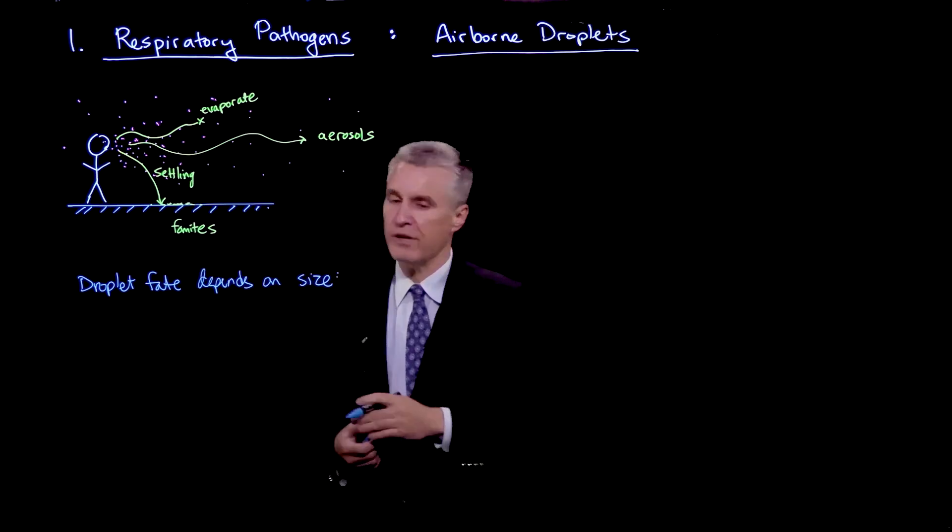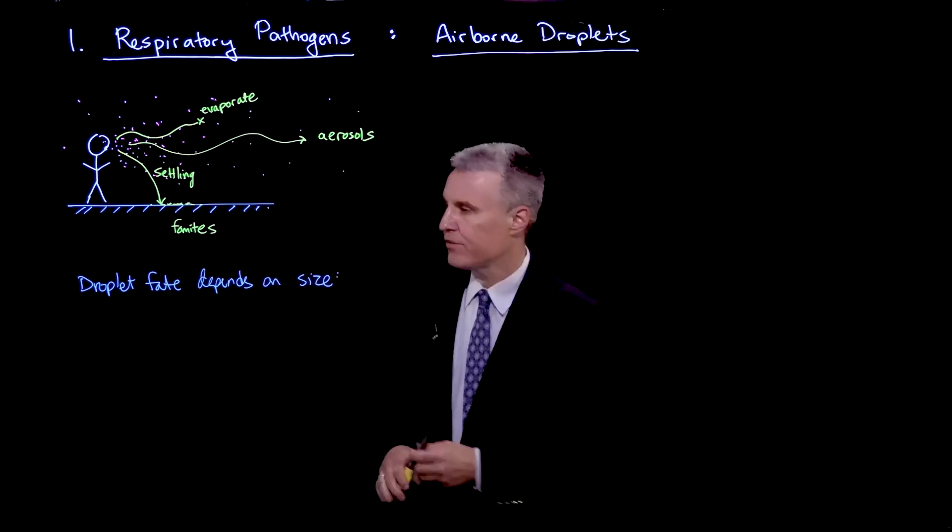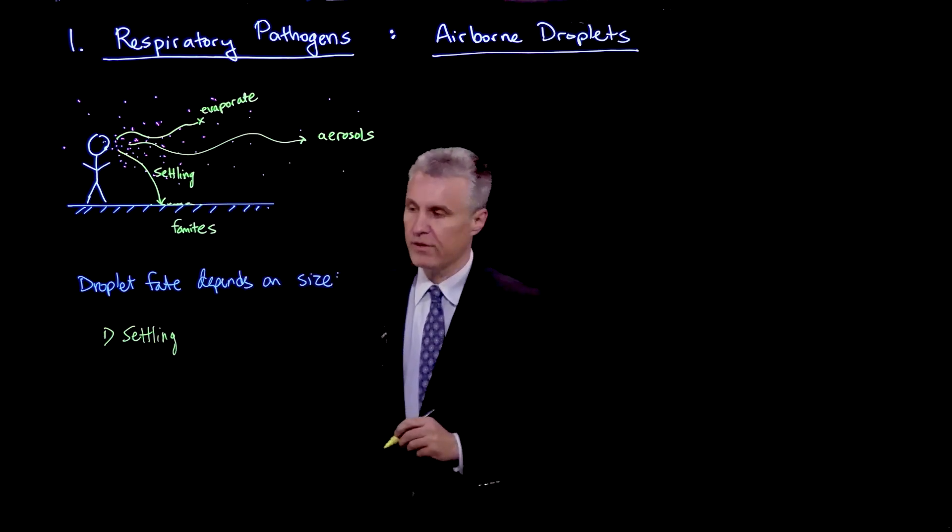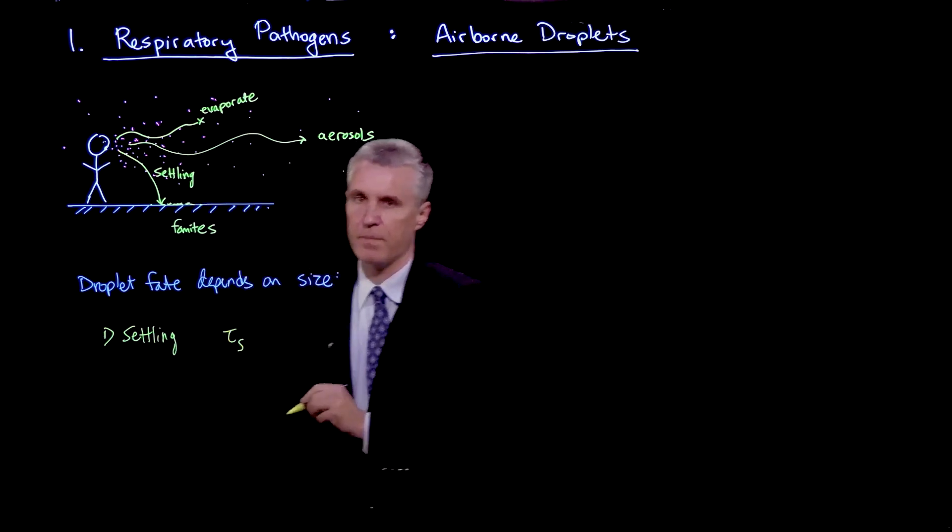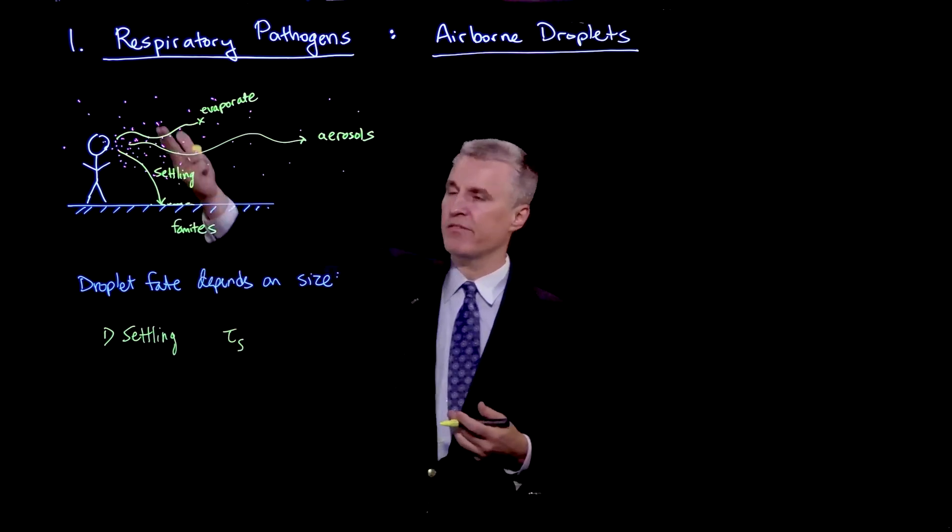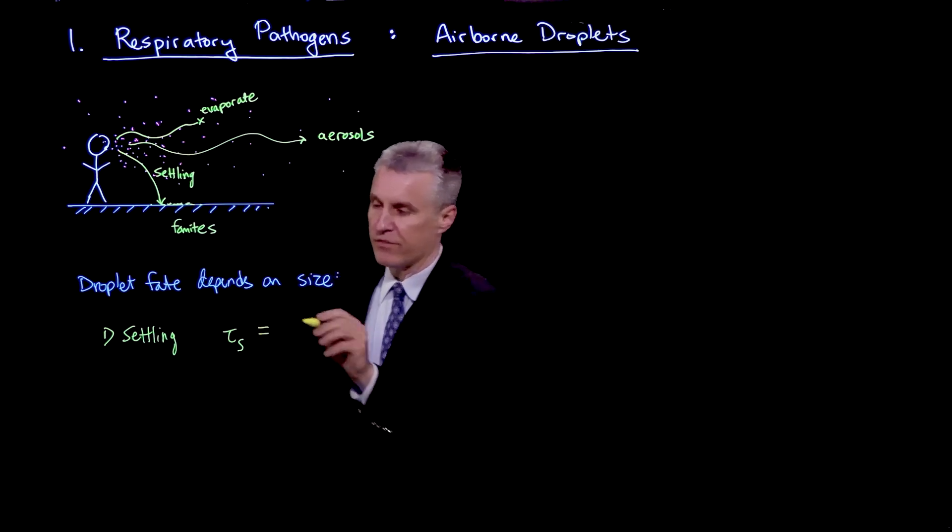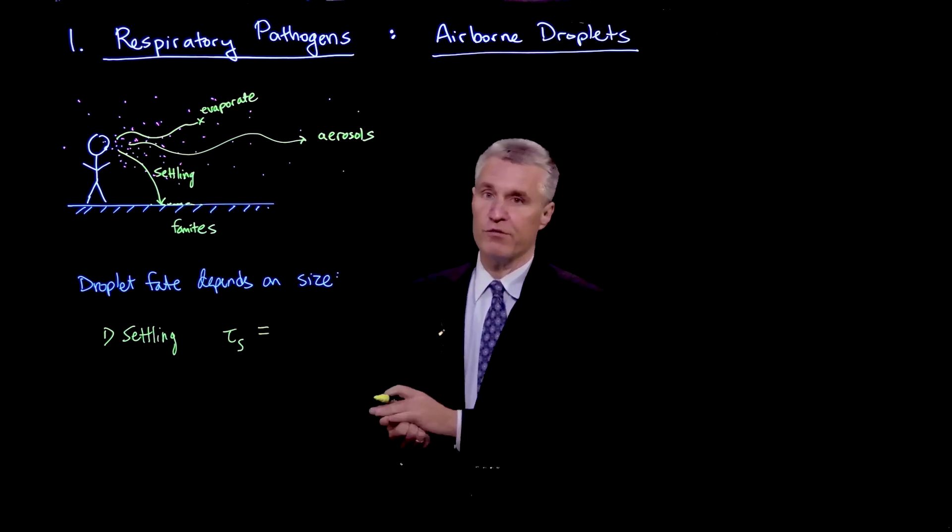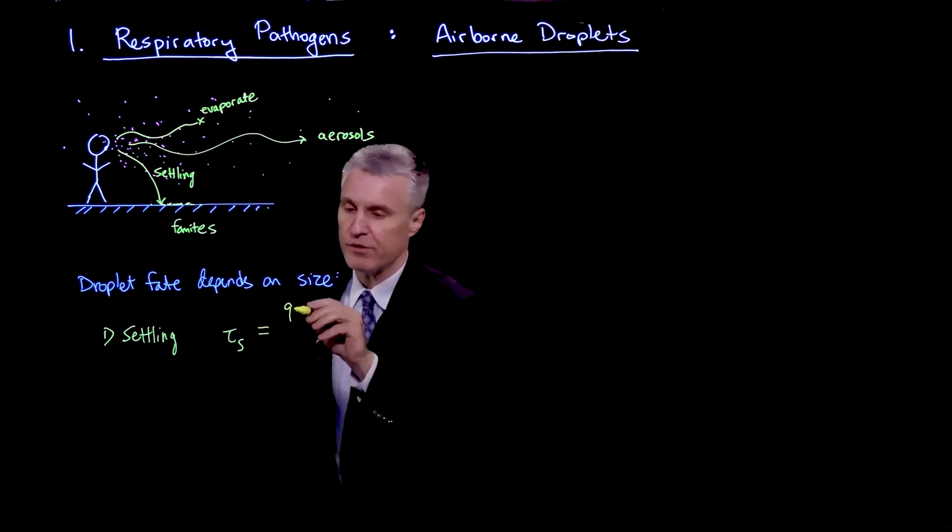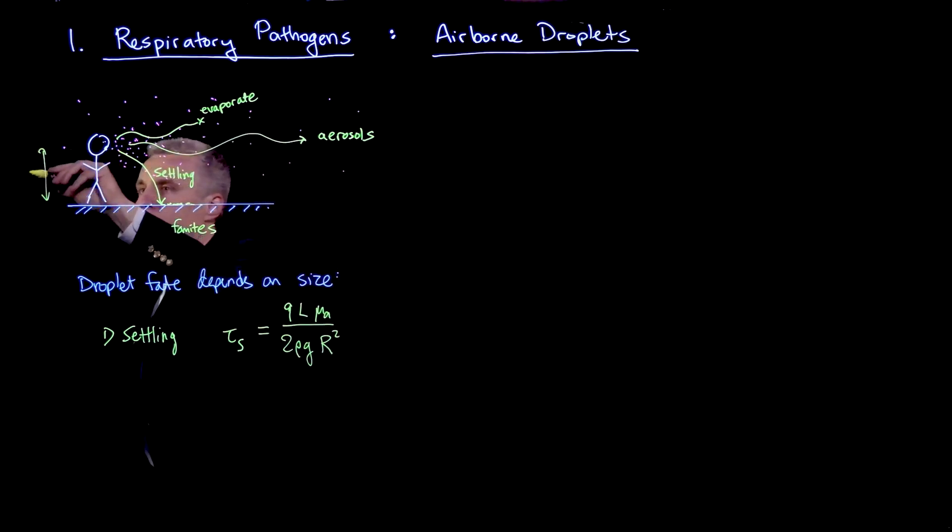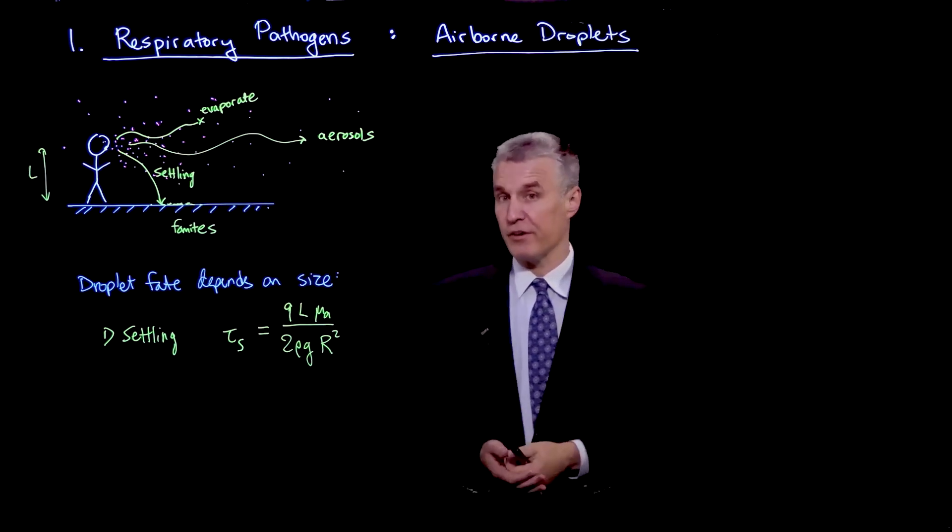Why don't we do some simple estimates of these different processes? So the first would be looking at settling. The settling time from a height L, which might be the height of a person, a typical number that's taken is 2 meters for a settling problem like this, is given by the following formula assuming we have a so-called Stokes law of settling which is valid. I'll just write the formula first: 9 halves L over 2 rho g R squared.